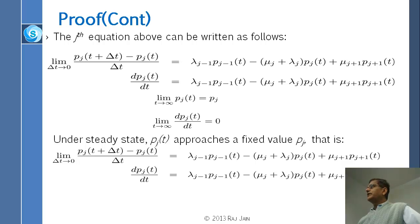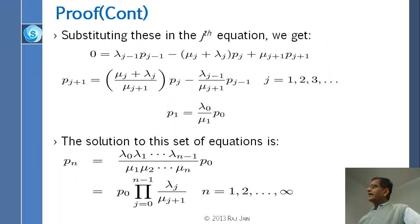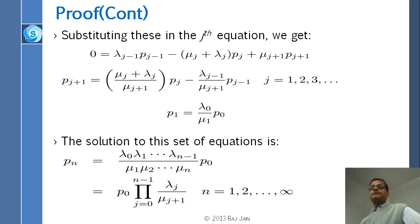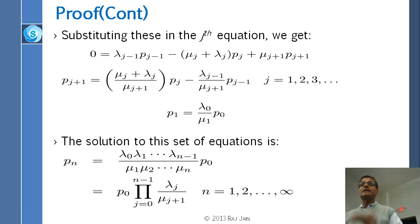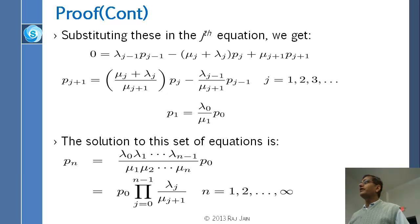Under steady state, dp/dt equals zero, so the whole expression is zero and you can write down that equation. When you solve those equations, you get that p_{j+1} equals (mu_j + lambda_j)/mu_{j+1} times p_j. In particular, p_1 equals lambda_0 upon mu_1 times p_0. Starting from this, you can calculate p_2, p_3, p_4, p_5. You find that p_n has a simple formula, expressible as a product of lambda_j upon mu_{j+1}. This is something you won't have to derive yourself since it's already published, but you should understand how it's derived. More importantly, we'll use this for the queues we're interested in.